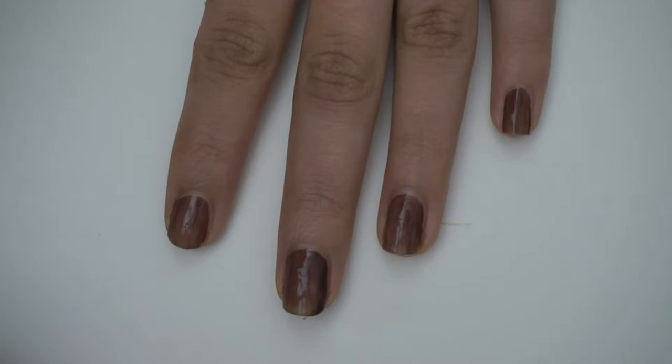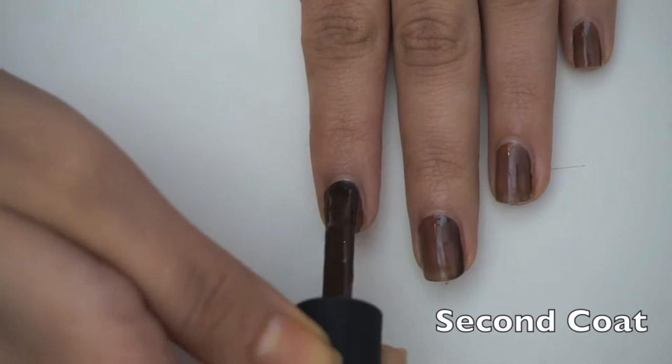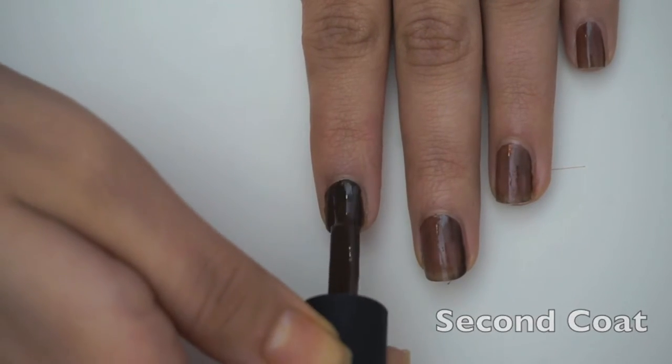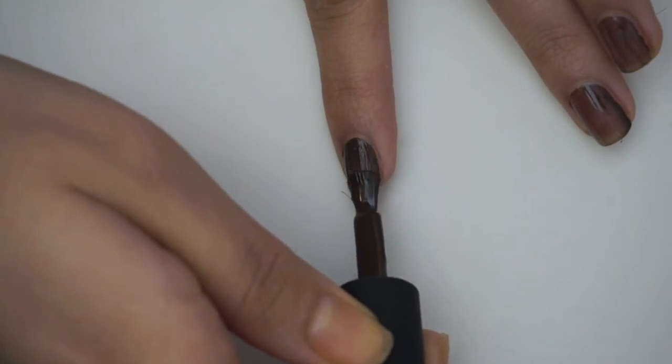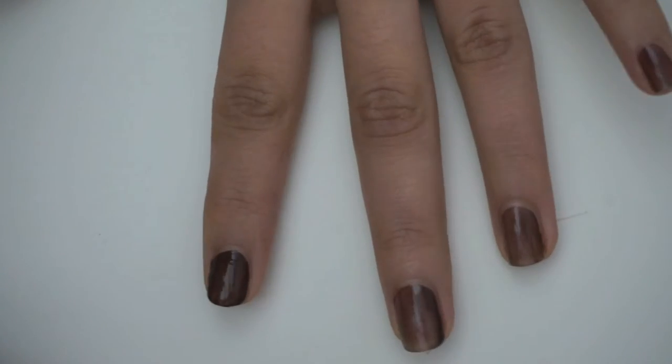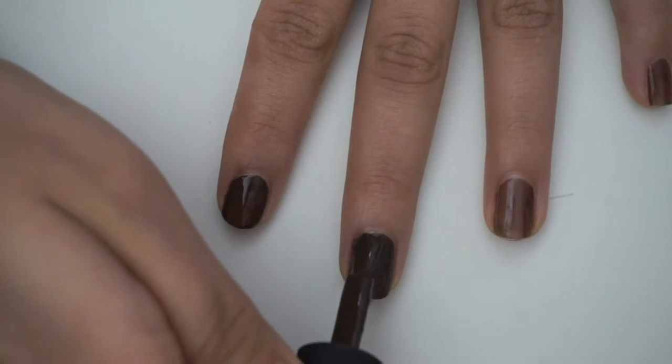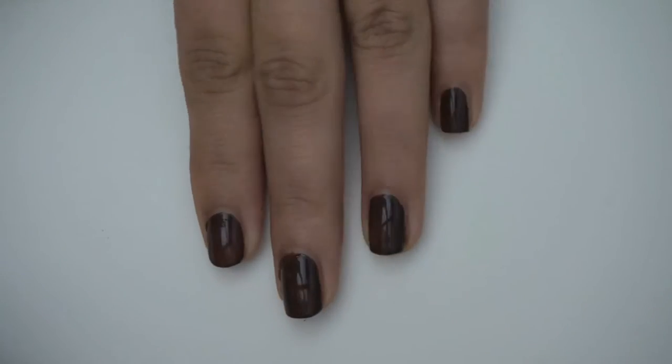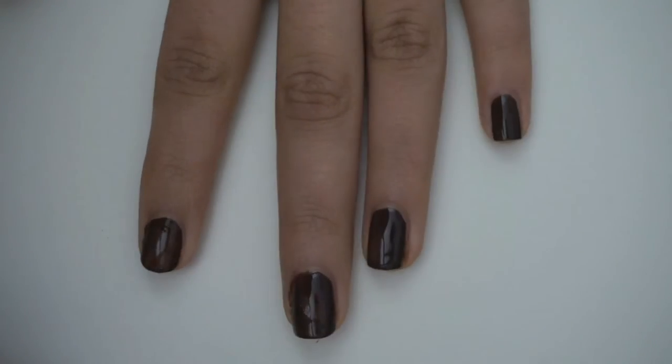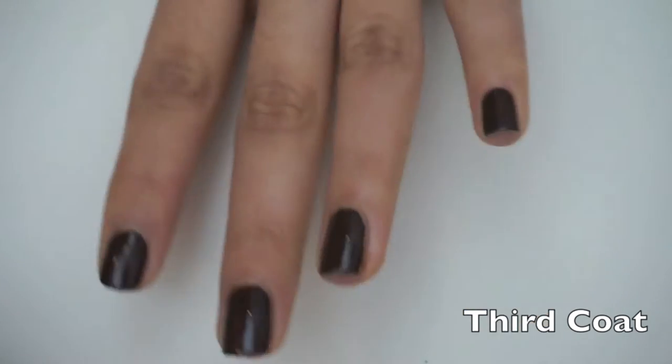This is what the first coat looks like - not good, not good. Now I'm putting on the second coat, and I am going to be putting on a third coat because this color still made it look streaky.